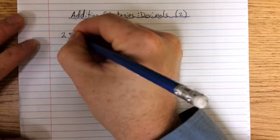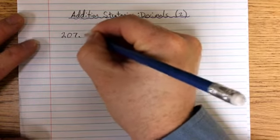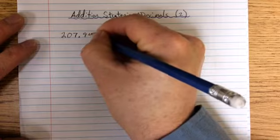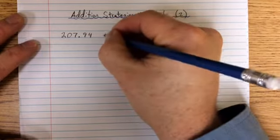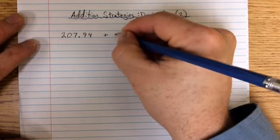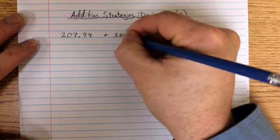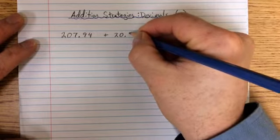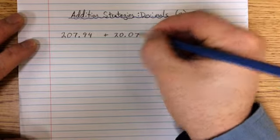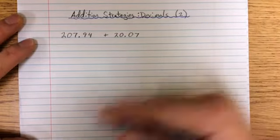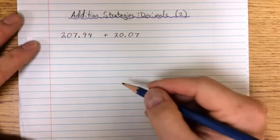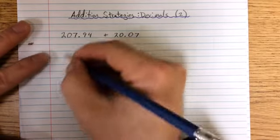We can take a number again, 207.94, and we can say that we're going to add it to 20.07. Again, we're going to do a stack, but to start off, let's just make sure that we can do our expanded form.